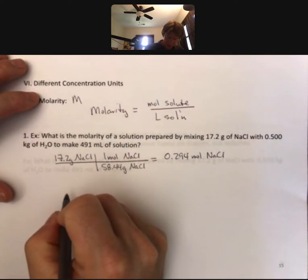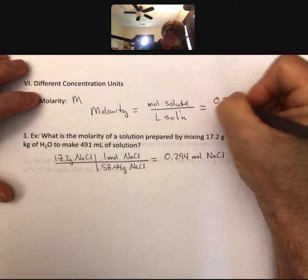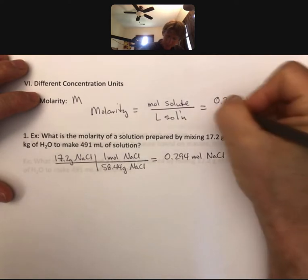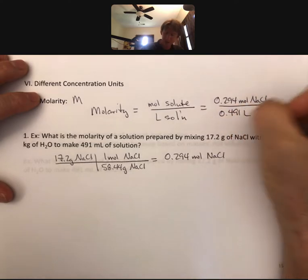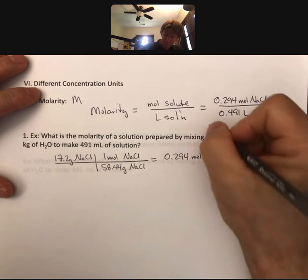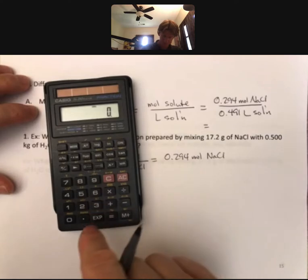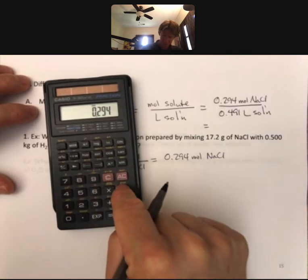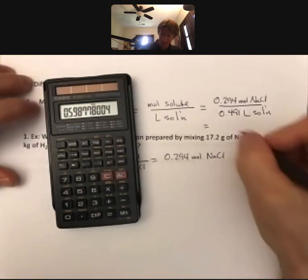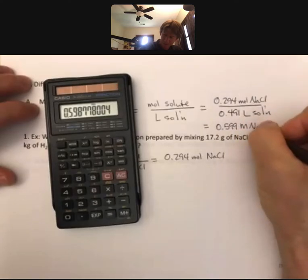Let's plug in. We have 0.294 moles of NaCl divided by 0.491 liters of solution, and that will allow us to calculate the molarity. 0.294 divided by 0.491 gives 0.599 to 3 significant figures — molarity.